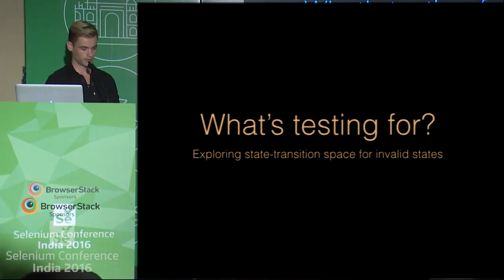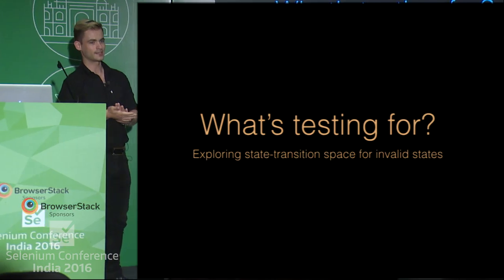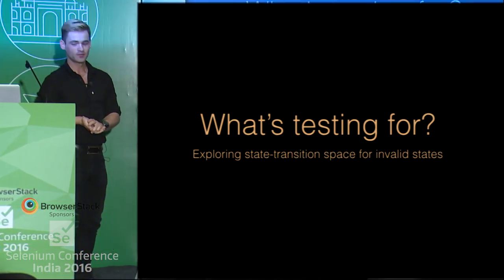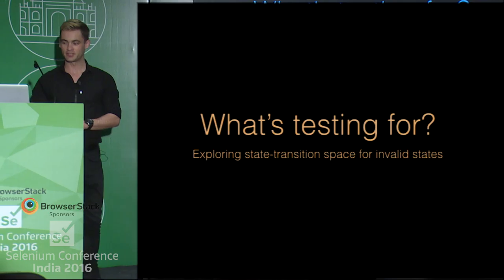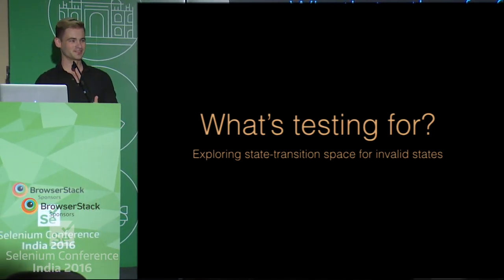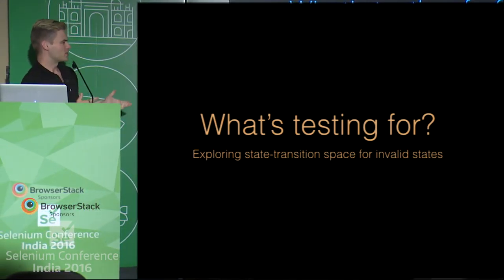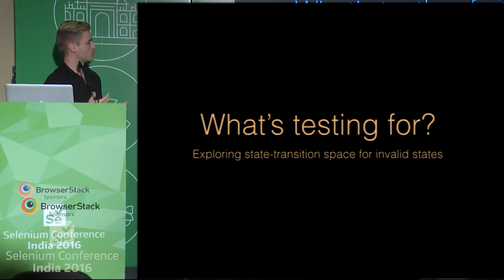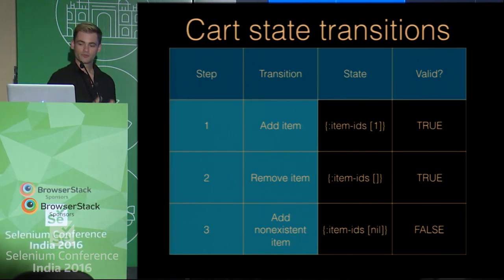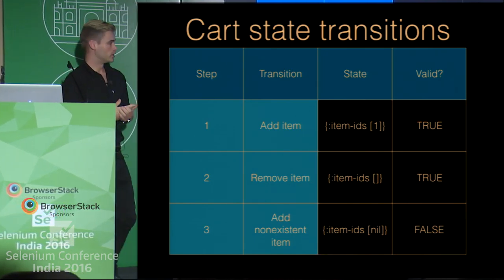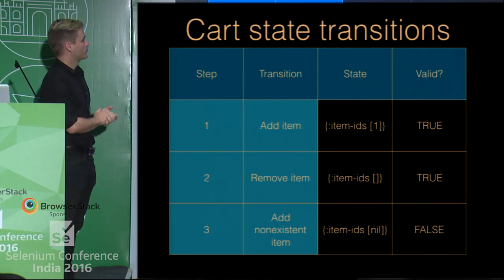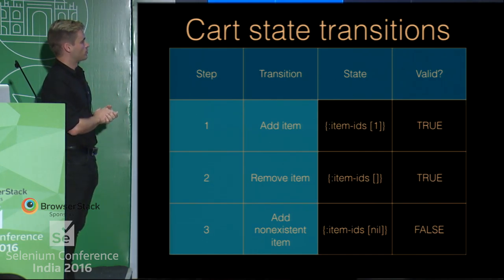So, what is testing for? I think you'll all agree that testing is for exploring state transition space for invalid states. It's a terrible definition, but it will help us think about this a little bit later. To give an example of what I mean, let's imagine we have a simple cart on a site or an app — we just have a couple of steps.